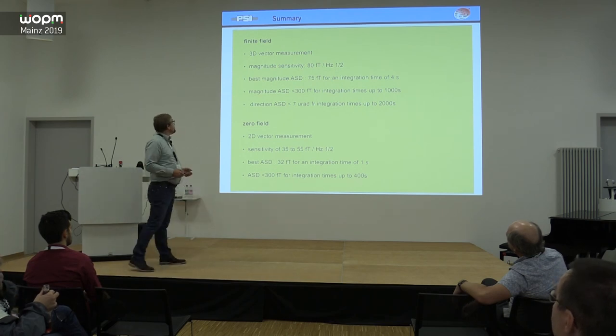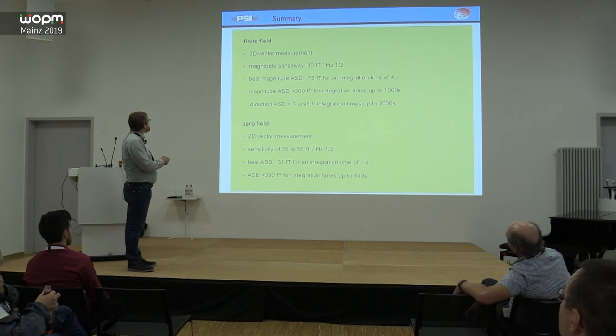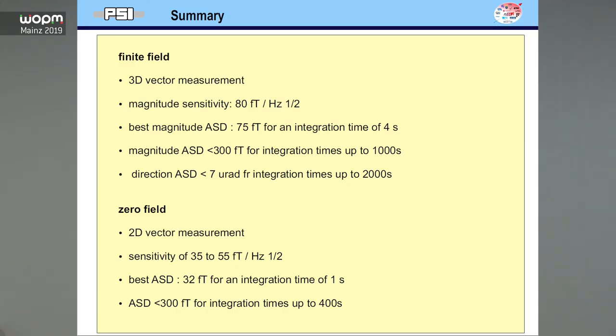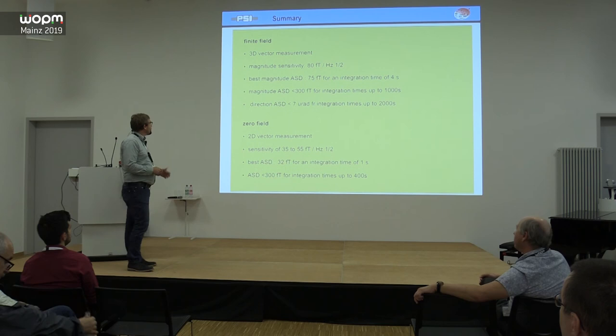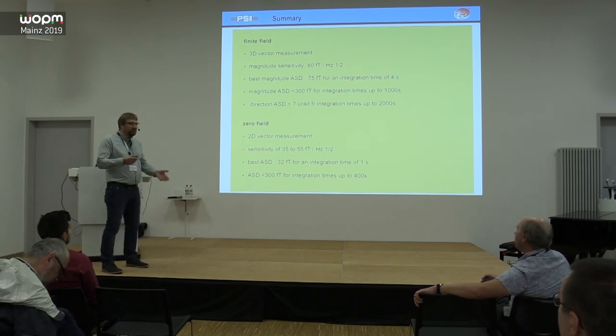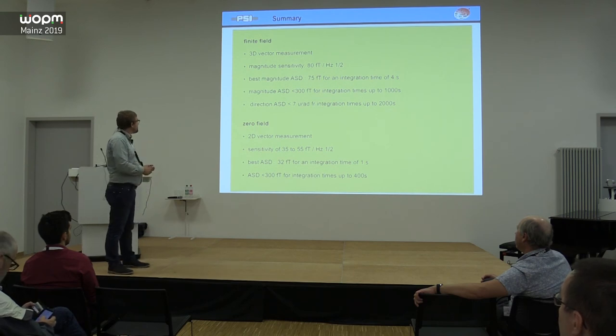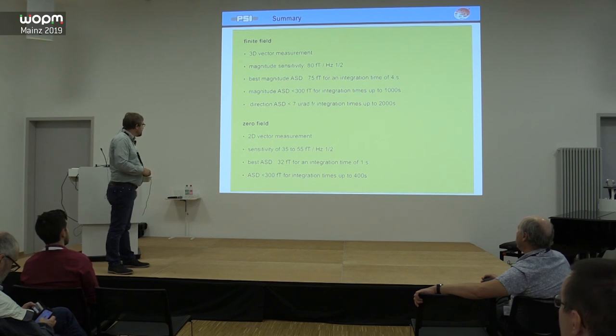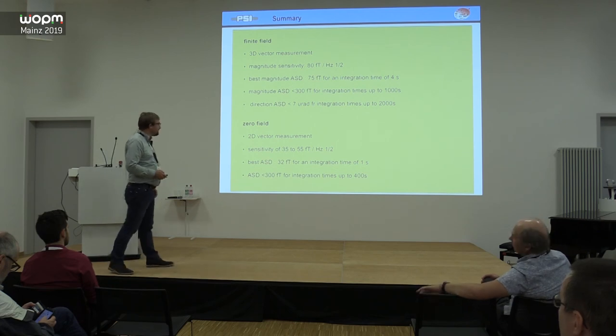Let me summarize. This device in finite fields does 3D vector measurements with a magnitude sensitivity on the order of 80 femtotesla per root Hertz and stable below 300 femtotesla Allan deviation up to a thousand seconds. And we can still angular resolution of about 7 microradians for even longer integration times. Then we can switch with the same physics package just by changing the way we drive the coils around it to zero field operation where we can do at least a 2D vector measurement with sensitivities better than 55 femtotesla per root Hertz and also stable operation for long integration times.